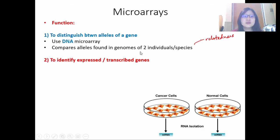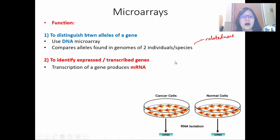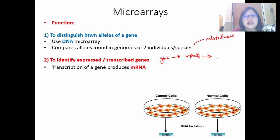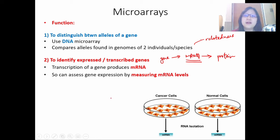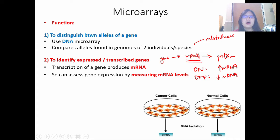However, if you use microarray to identify expressed or transcribed genes — so to look at gene expression — this means you'll be looking for mRNA. Why would you use mRNA? Well, if a gene is expressed, it will be transcribed to mRNA, and the mRNA will be translated into protein. Therefore, if the gene is expressed, there will be mRNA. So we can find mRNA levels and assess how much that gene is expressed. If the gene is turned on, we will expect high mRNA levels, but if the gene is switched off, there will be low mRNA levels or none at all.